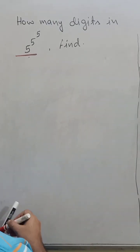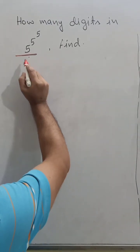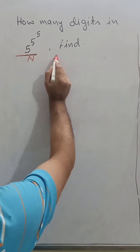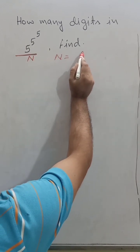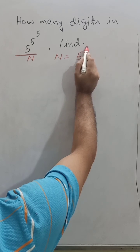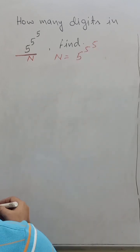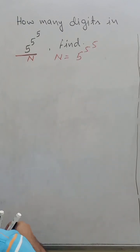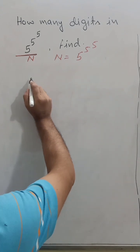So let's - this is capital N, capital N equal to 5 to the power 5 to the power 5. So here it is the formula to find the number of digits.